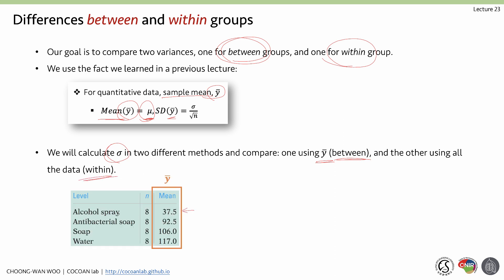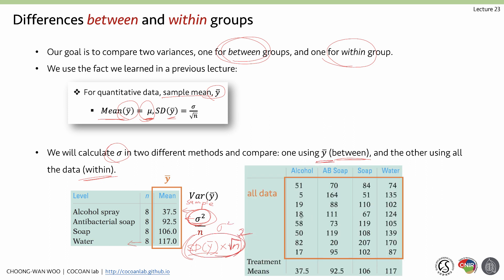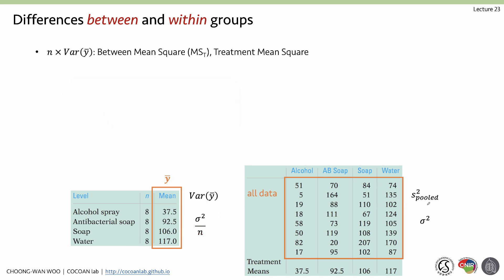The group means are: ȳ = 37.5 for alcohol spray, 92.5 for antibacterial soap, 106 for regular soap, and 117 for water. We treat each group as a sample with the same mean. At the population level, the variance is the standard deviation of ȳ times √n squared — that is, variance of ȳ times n gives us the population-level variance.